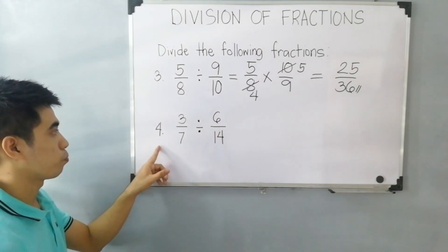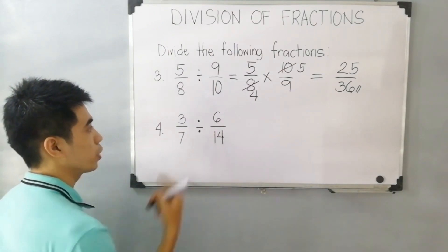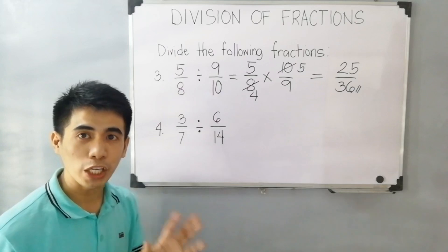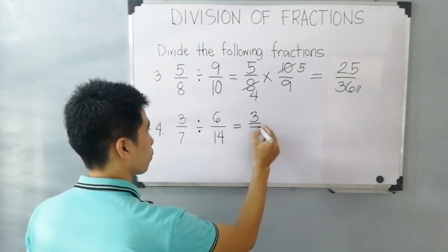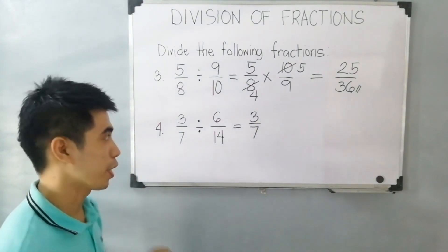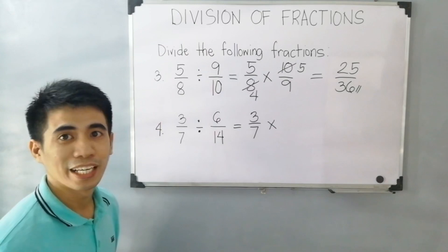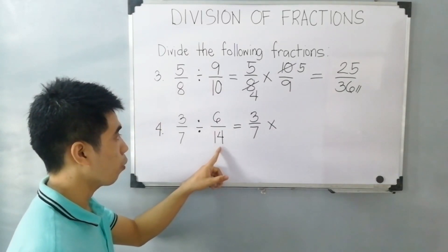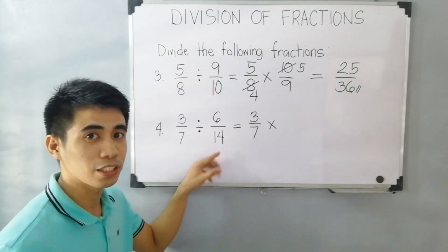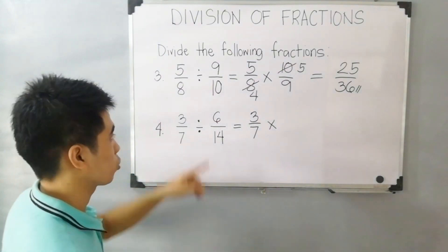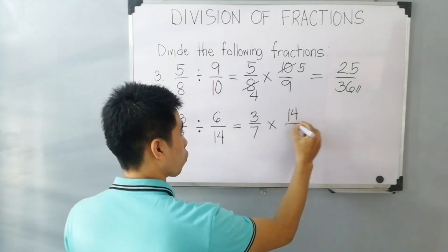Let's proceed to example number 4: 3 over 7 divided by 6 over 14. The first step is to keep or rewrite the first fraction, which is 3 over 7. The second step is to change the operation into multiplication. And the next step is to flip or get the reciprocal of the second fraction — reversing the numerator and denominator. So 6 will become the denominator and 14 will become the numerator: that is 14 over 6.